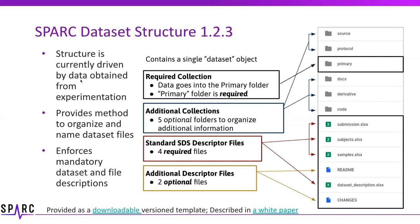To refresh your memory, the 1.2.3 data structure has a set of required data primarily in the primary folder, which is absolutely required for all datasets. There are optional folders including code, derivative, documents, protocol, and source folders. There are also four required dataset description files — including submission, subjects, samples, and the dataset description — plus a couple of optional files. A white paper has also been accepted for publication.